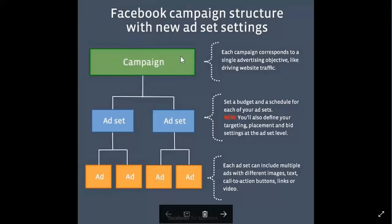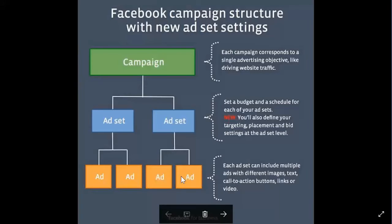So that's your top level — that's your campaign, that's where you select your objective. And your objective can't change for each ad set. An ad set is basically where you set your budget and your schedule for each of your ads. You'll be defining your target placement and bid settings at this level. Under the ad sets you're going to have each individual ad, which includes your text and images, call to action buttons, and links — this is what people actually see. You can have multiple ads in an ad set and multiple ad sets in a campaign, but if you choose a website click campaign, all ad sets must share that same campaign objective.